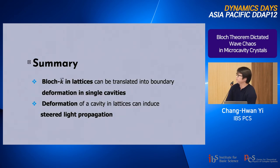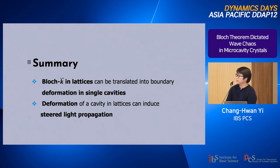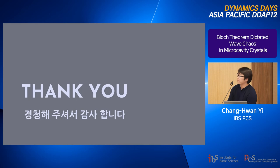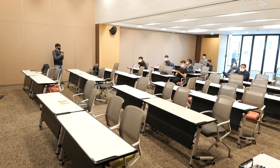To summarize: we have learned that the Bloch wave vector k in a lattice can be equivalently translated into the boundary deformation in single cavities. In the final topic, we have seen that deformation of a cavity in a lattice can induce steered light propagation.